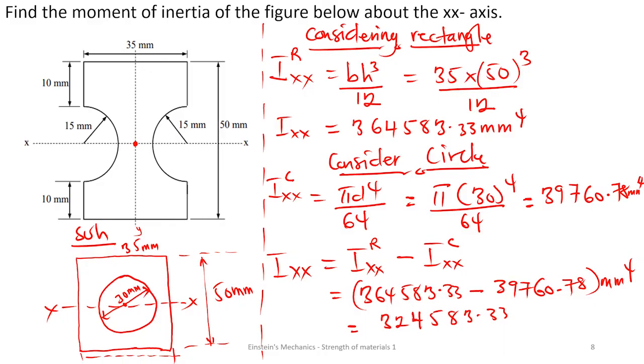And this is going to be, you can send the answer to a simpler form so that it will be very simple. So 324822.54 mm to the power 4, which is the same as 3.25 times 10 to the power 5 mm to the power 4. So this is the moment of inertia of the plane figure shown.